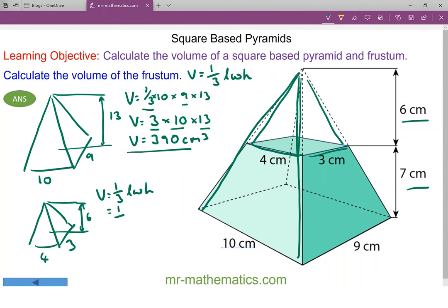One third of 3 is 1, so they cancel to make 4 times 6, which is 24 centimeters cubed. So the volume of the frustum is the difference between the two.